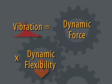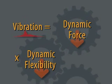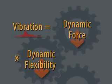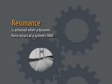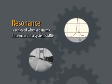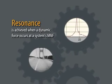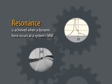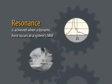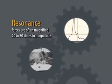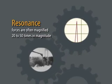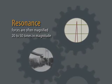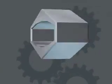Dynamic flexibility is a system's ability to withstand reciprocating forces. Vibration is mitigated by either reducing dynamic forces, reducing dynamic flexibility in the support structures, or both. Lastly, a system is said to achieve resonance when a dynamic force occurs at its mechanical natural frequency — a critical state where forces are often magnified 20 to 50 times, which often leads to structural failure.